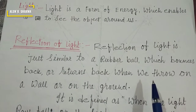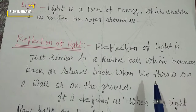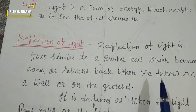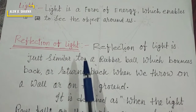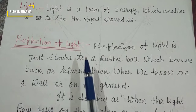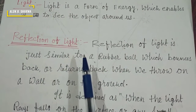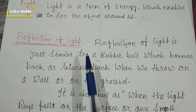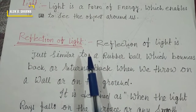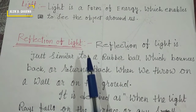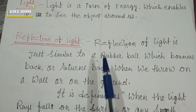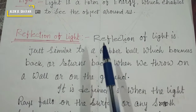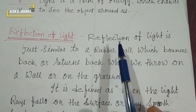You can understand reflection of light using the example of a rubber ball. When you throw a rubber ball towards a wall, it comes back to you. A similar situation happens with light — when light rays fall on any smooth surface, they return back to the same medium. This bouncing back action is called reflection of light.